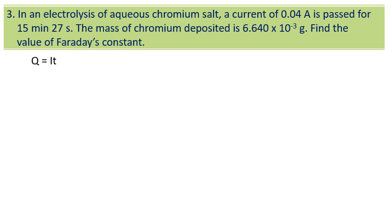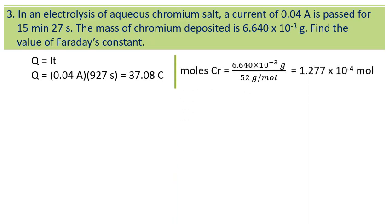Formula of Q equals I times t. Substitute the value given and the value of Q is 37.08 coulomb. Then, the moles of chromium calculated by the mass divided with molar mass. The value is 1.277 times 10 to the power of negative 4 mole.